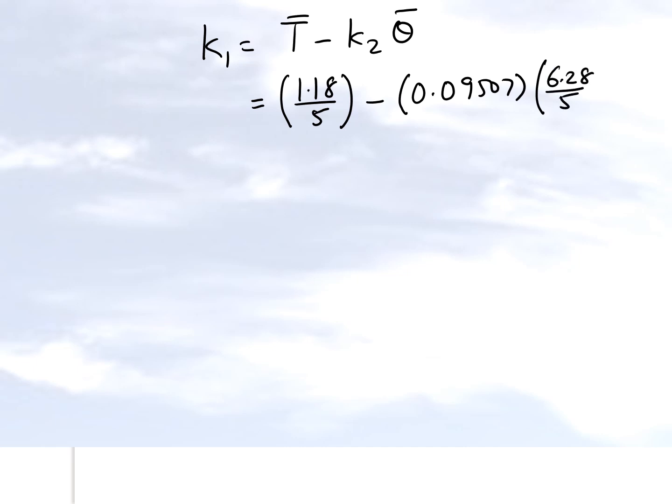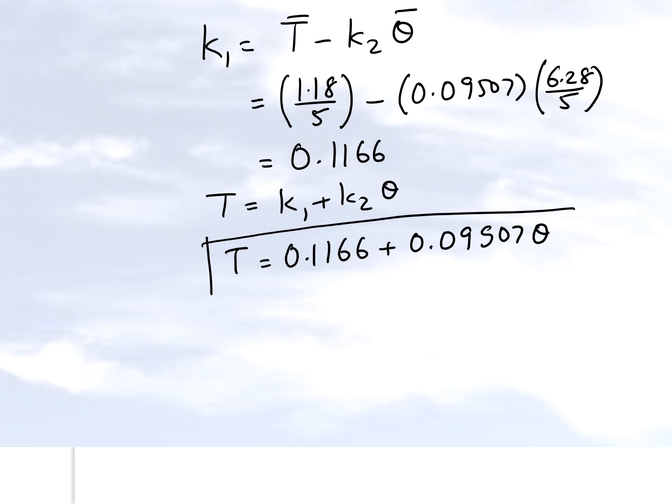So our general model was torque is equal to k1 plus k2 theta. So k1 we just found out was 0.1166, and k2 we found from the previous slide, which was this quantity right here. So that's our general linear regression model for torque versus theta for this particular case here.